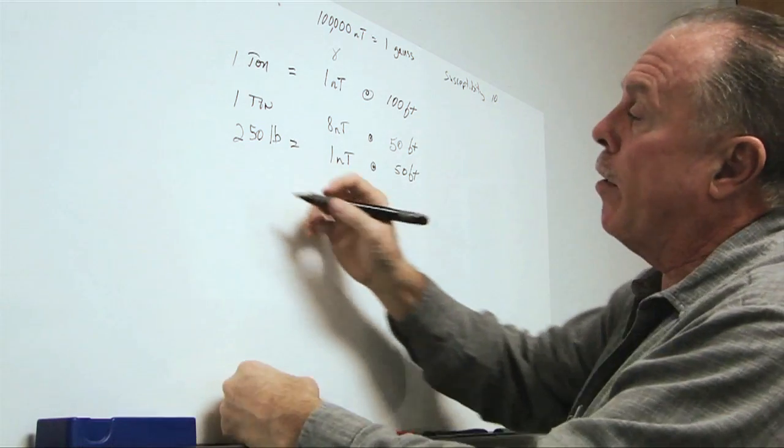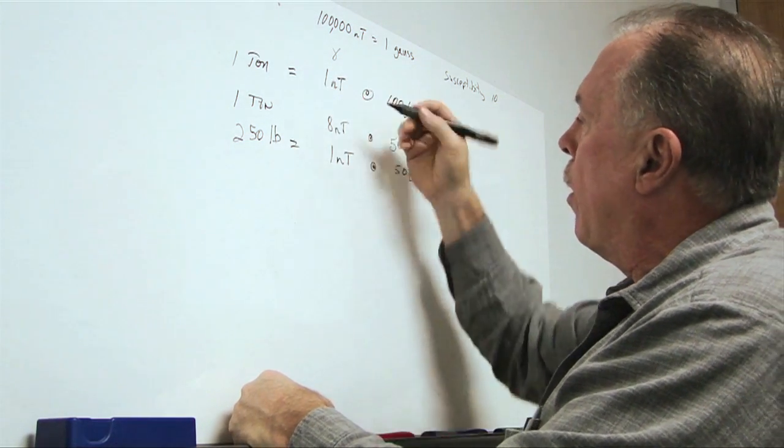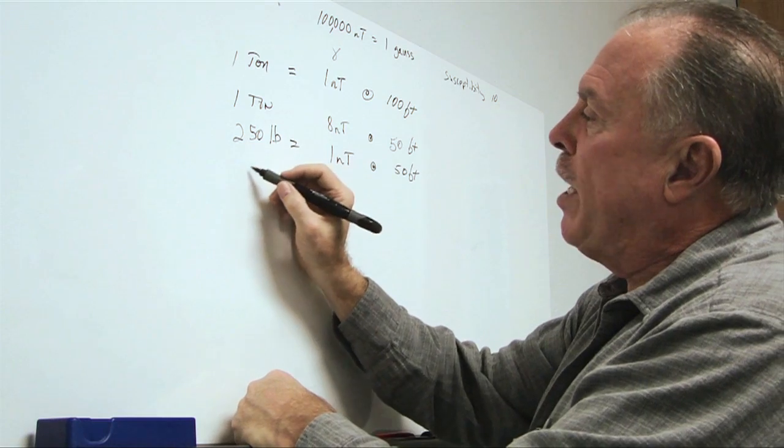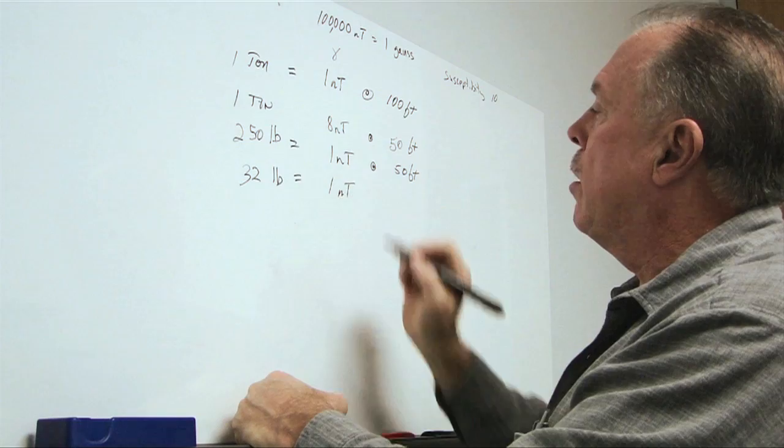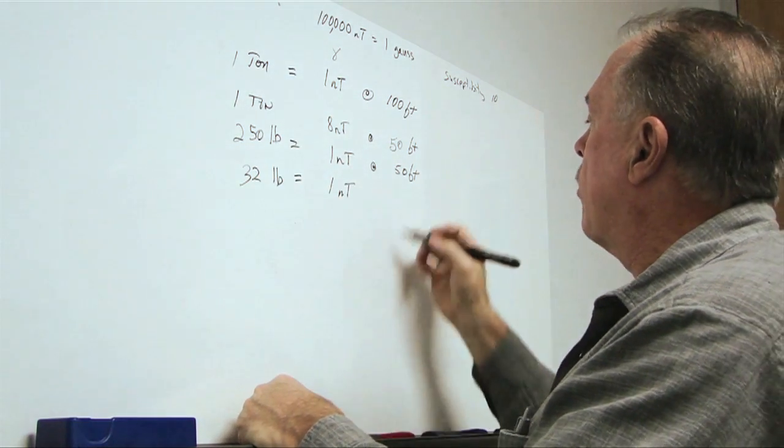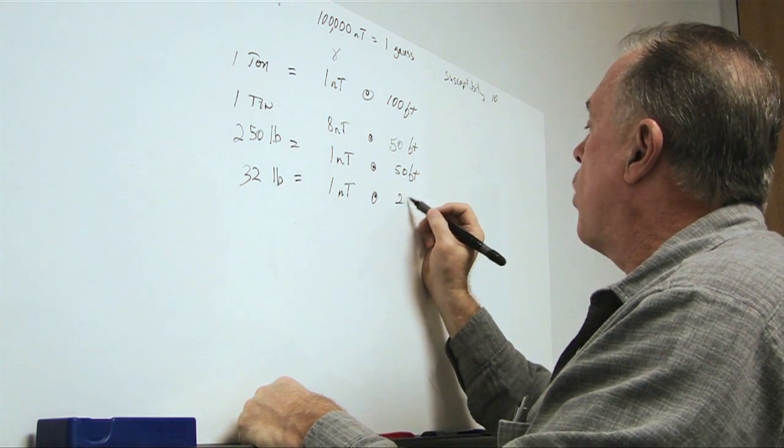Let's continue on. With the same relationship, we can get down to, say, 32 pounds equals one nanotesla. So, we cut that down by a factor of eight, so that means the distance is at 25 feet.